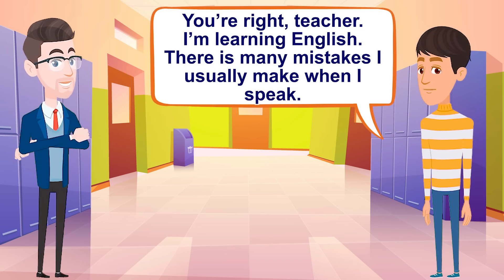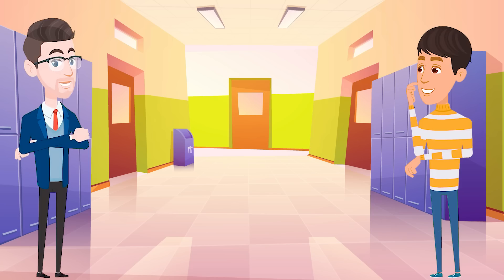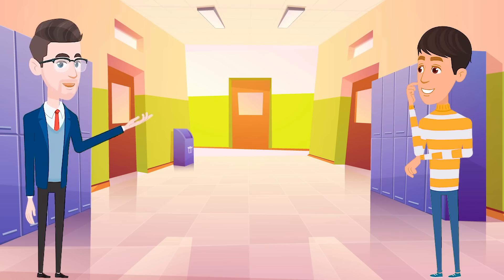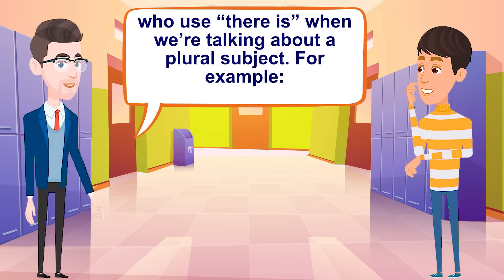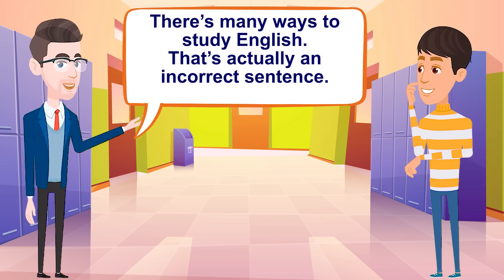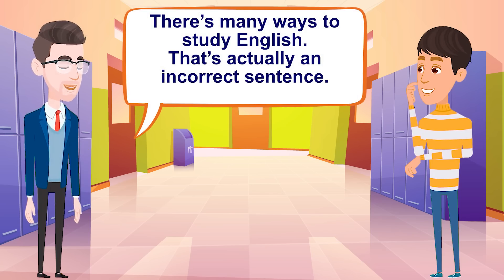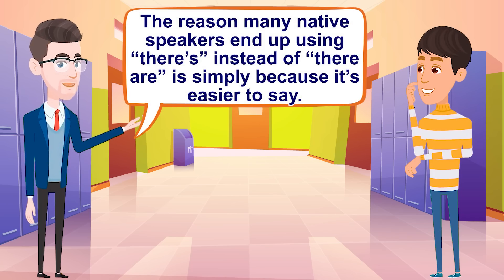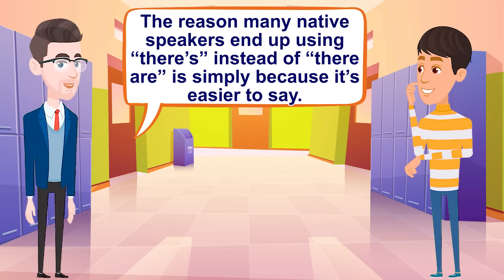You're right, teacher. I'm learning English. There's many mistakes I usually make when I speak. Another mistake! But don't worry — there are a lot of people, especially native speakers, who use 'there is' when we're talking about a plural subject. For example, 'there is many ways to study English' — that's actually an incorrect sentence.